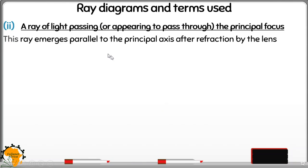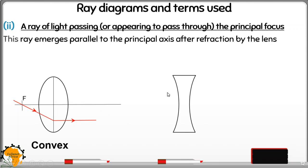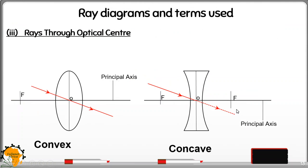The second ray: a ray of light passing through, or appearing to pass through, the principal focus. After refraction through a convex lens, it emerges parallel to the principal axis. For a concave lens, a ray appearing to come from F also emerges parallel to the principal axis after refraction. The third ray: a ray passing through the optical center goes undeviated — it does not change direction, for both the convex and the concave lens.